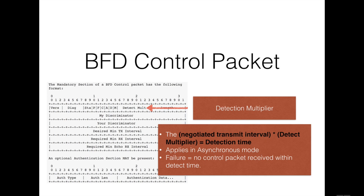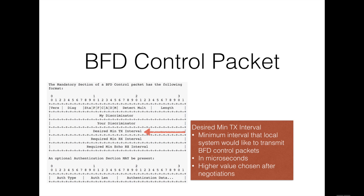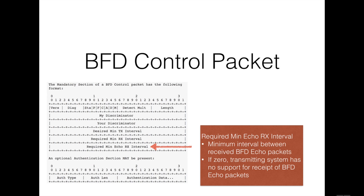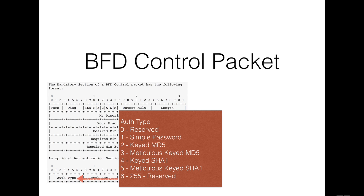BFD then notifies its clients and they begin the reconvergence process. The desired minimum transmit interval is the minimum interval in microseconds that the local system would like to use when transmitting BFD control packets, while the required minimum receive interval is the minimum interval between received BFD packets that the system is capable of supporting. Another important interval is the required minimum echo receive interval — the minimum interval between received BFD echo packets this system can support. If this value is zero, the transmitting system does not support receiving BFD echo packets.